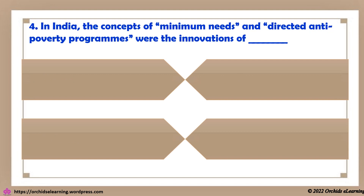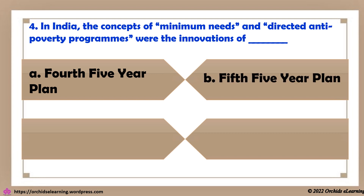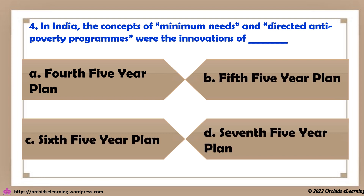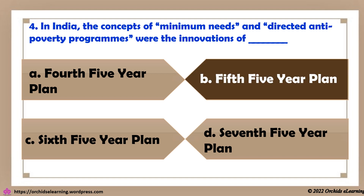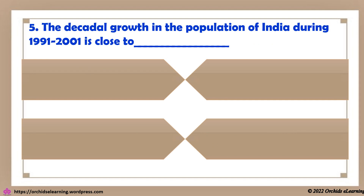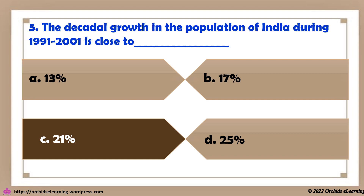In India, the concepts of minimum needs and directed anti-poverty programs were the innovations of the Fifth Five Year Plan. The decadal growth in the population of India during 1991 to 2001 is close to 21 percent.